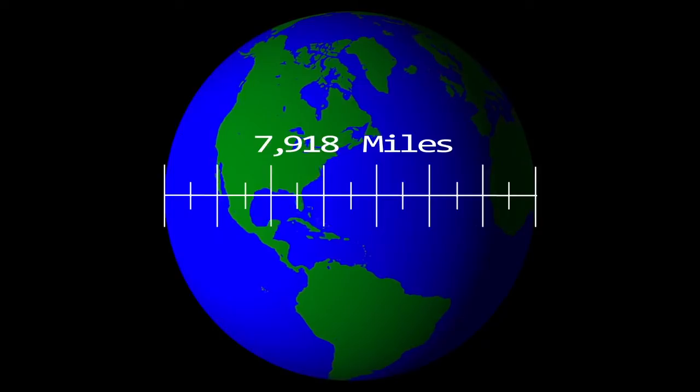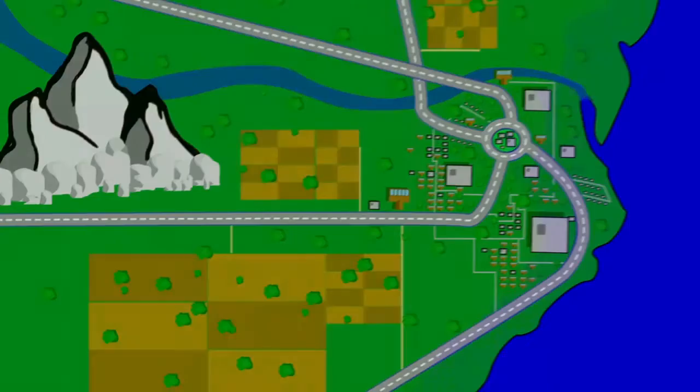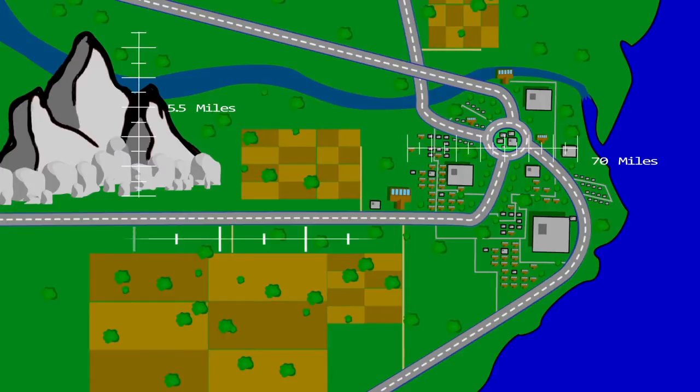Here's the global scale, where we can see continents and oceans. Here's the city scale, where we can see cities, mountains, rivers, and highways.